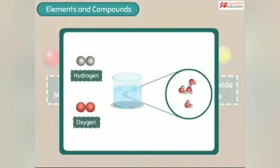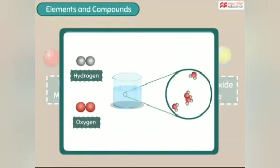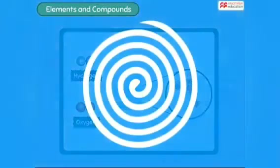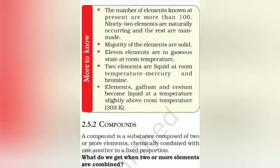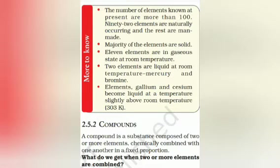The properties of a compound are different from the properties of the elements that make up the compound. The number of elements known at present is more than 100; 92 elements are naturally occurring and the rest are man-made. The majority of elements are solid. Eleven elements are gaseous at room temperature, and two elements — mercury and bromine — are liquid at room temperature. Elements like gallium and cesium become liquid at temperatures slightly above room temperature.